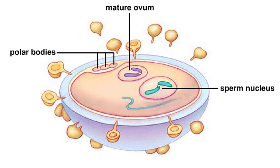Inside the oocyte's cytoplasm, the sperm degenerates until only its nucleus and centrioles remain. Penetration induces the secondary oocyte to finish meiosis. There are now three polar bodies and a mature ovum, or egg.